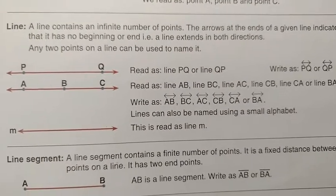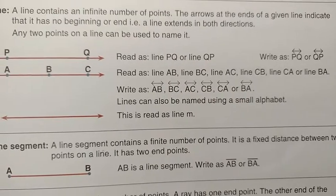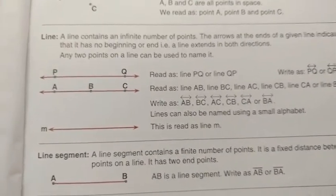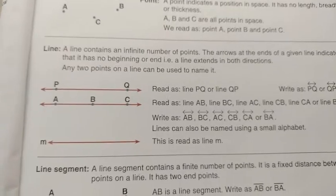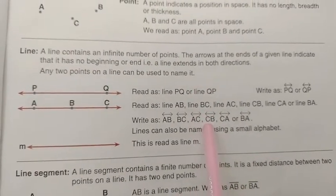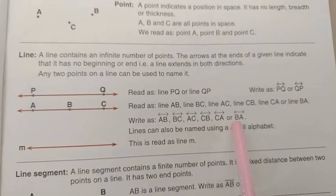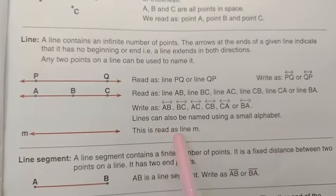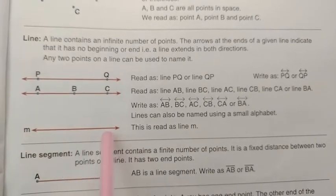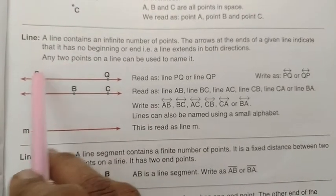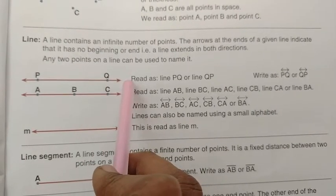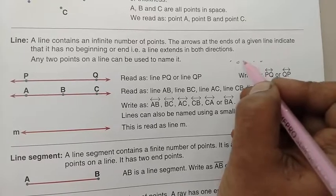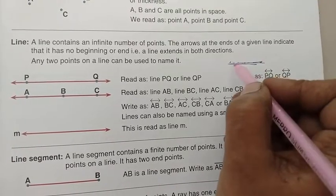Read as line AB, line BC, line AC, line CB, line CA, or line BA. Lines can also be named using a small alphabet — this is read as line M. Line means it can extend on both sides; it is made up of an infinite number of points.